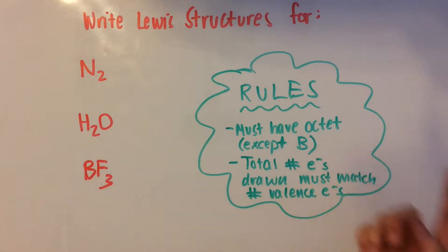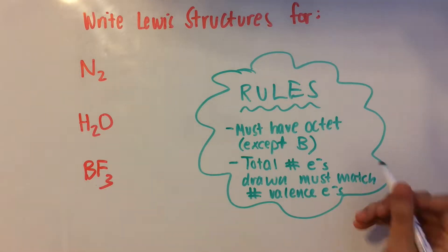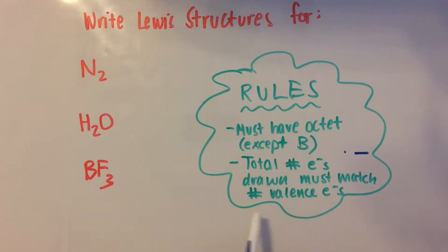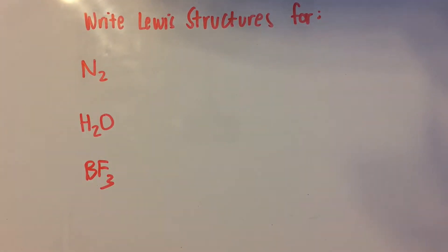And I have a couple of rules here that we have to follow. Each element must have an octet of electrons surrounding it, except for boron. That's the only exception. And the total number of electrons drawn, which we're going to symbolize electrons with either dots or lines, must match the total number of valence electrons that you calculate from the periodic table.